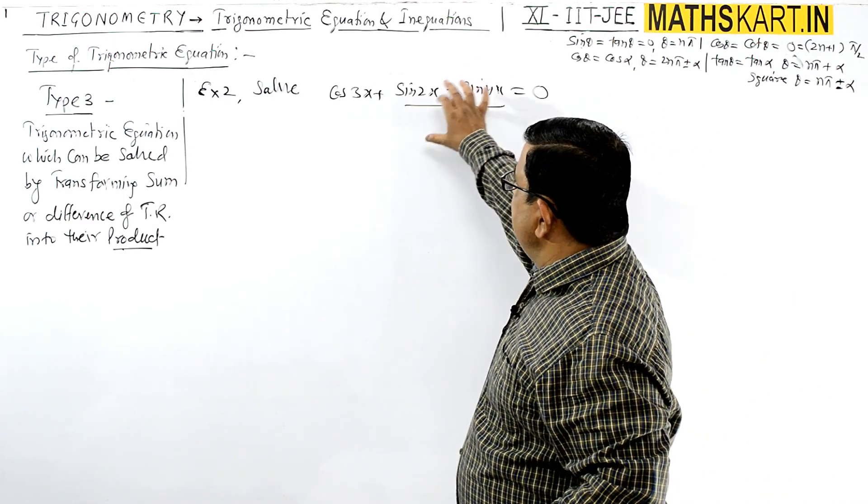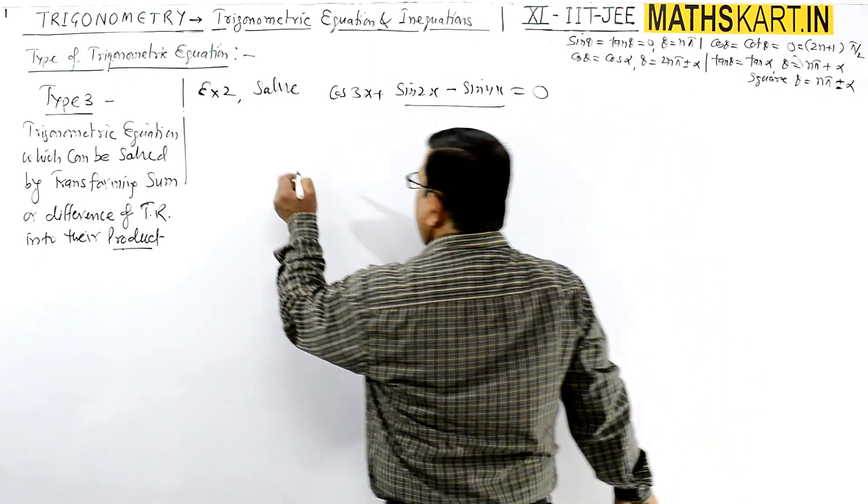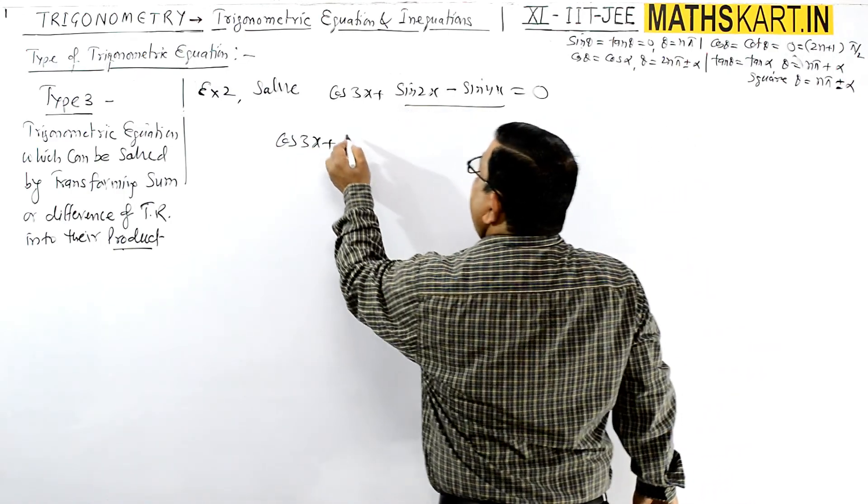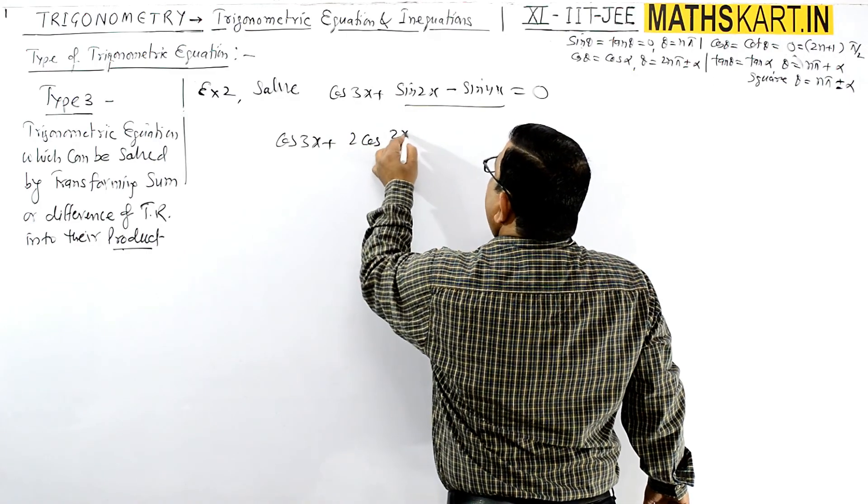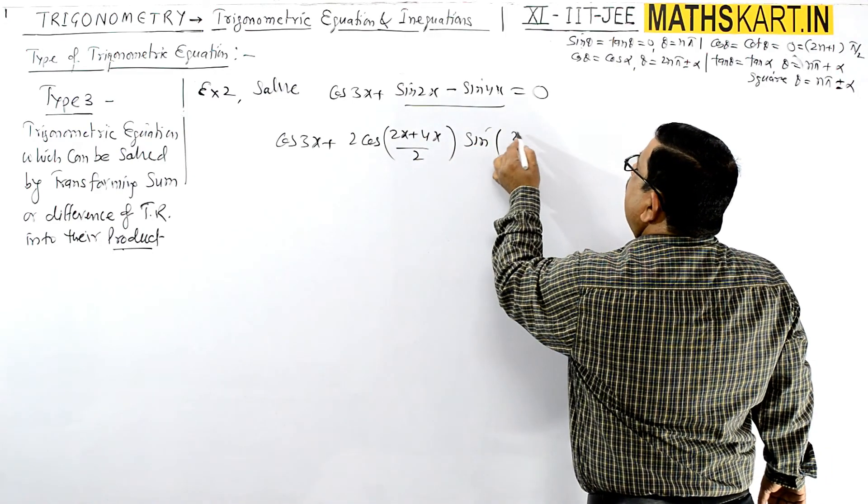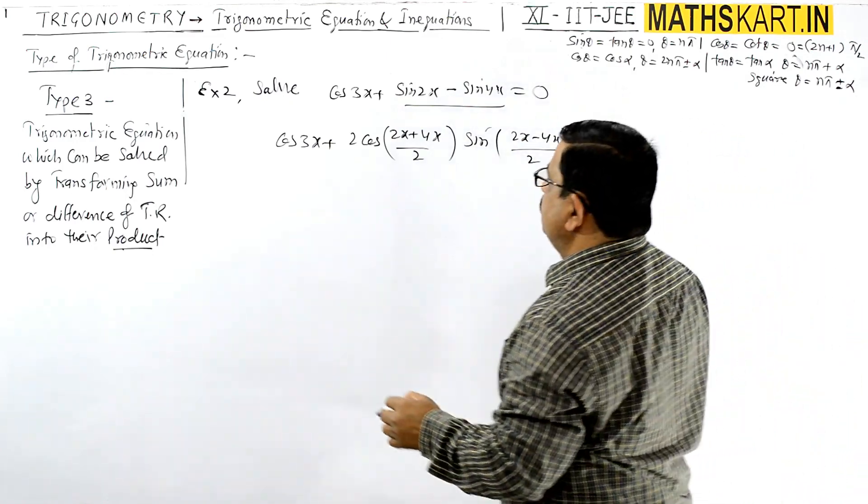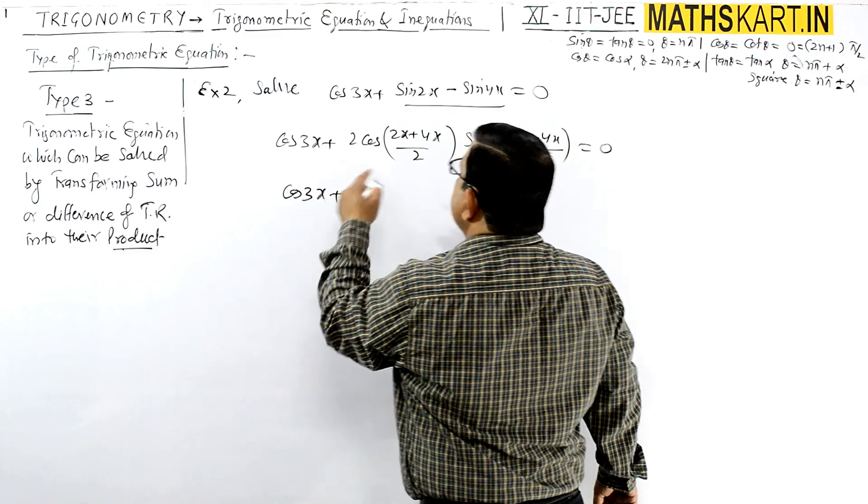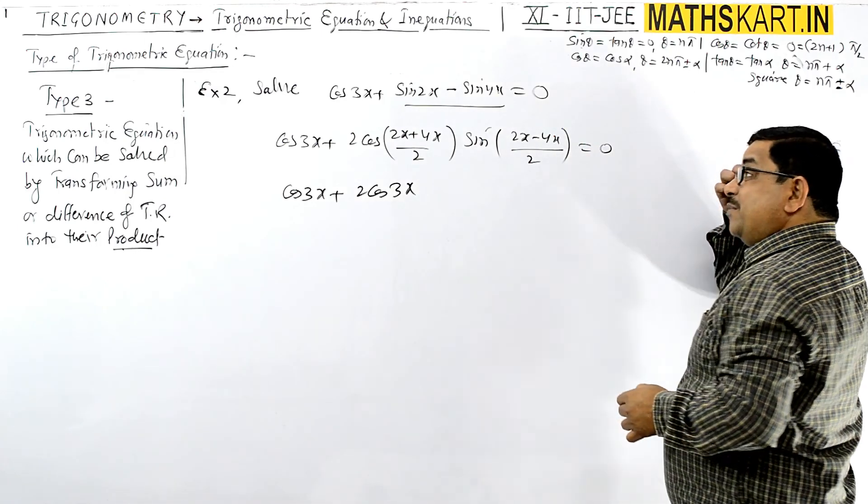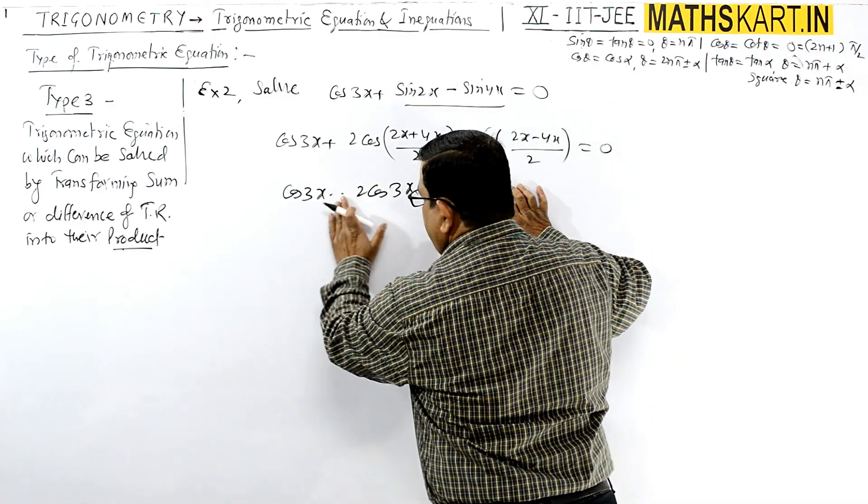So the two sine trigonometric ratios will combine. This is cos 3x + sin C - sin D, which gives: cos 3x + 2 cos((2x + 4x)/2) sin((2x - 4x)/2) = 0. This becomes cos 3x + 2 cos 3x sin(-x) = 0.